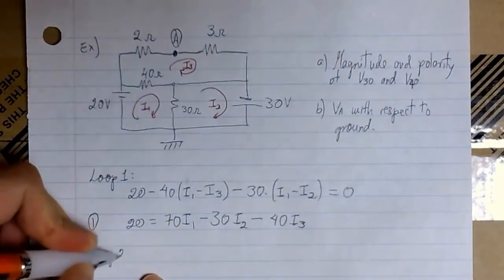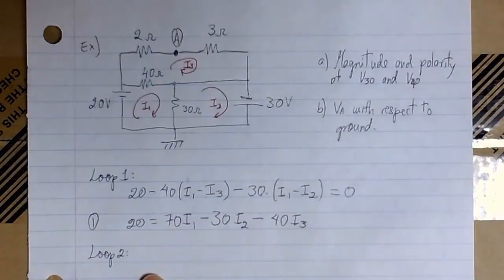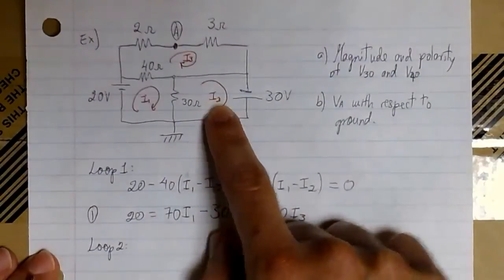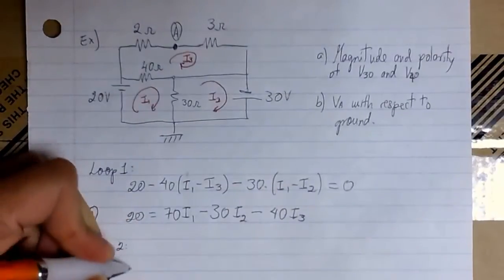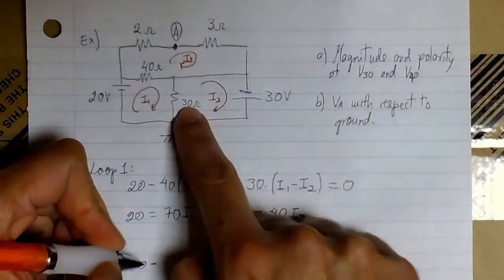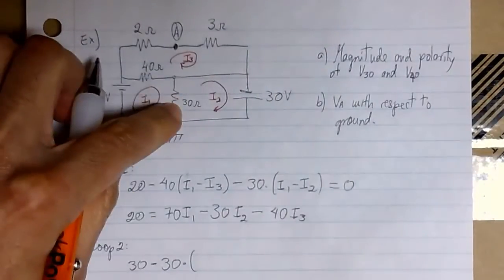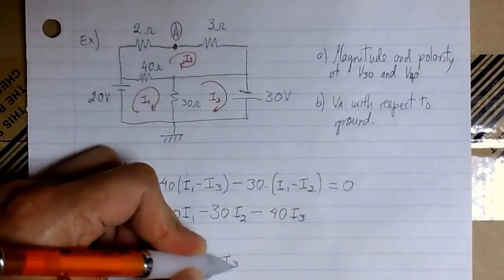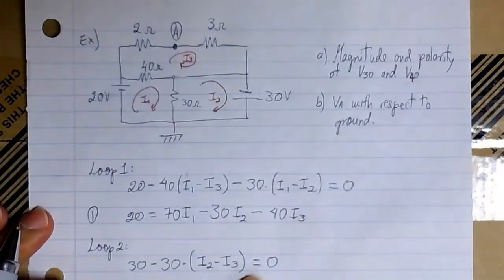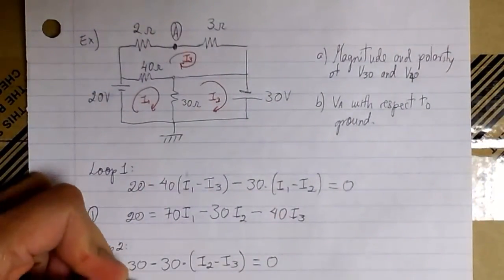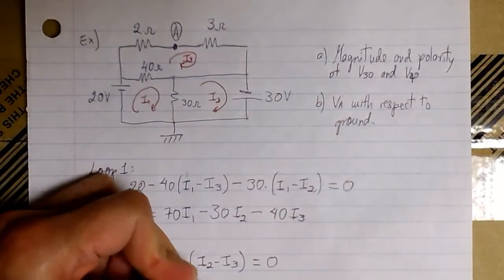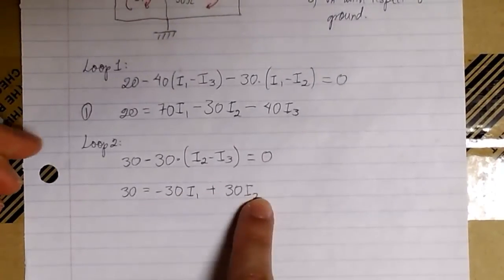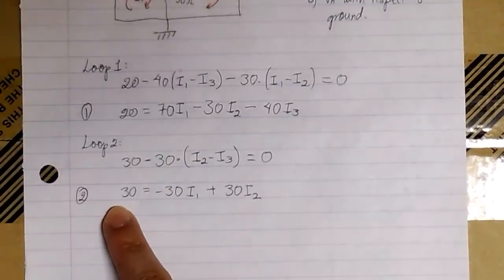Now we do exactly the same thing for loop 2. Loop 2 is very simple because we just have one source and one resistor. We have 30 volts minus the drop across 30, which is 30 times the current I2 minus I1, and that equals zero. That's equation 2.